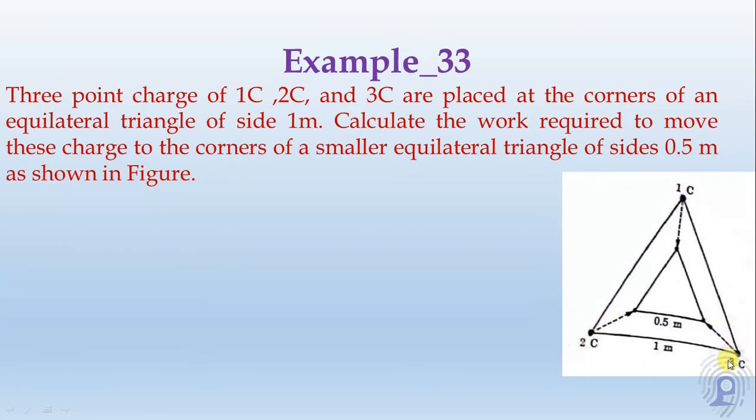1 coulomb, 2 coulomb, 3 coulomb are placed at the corners of an equilateral triangle of side 1 meter.